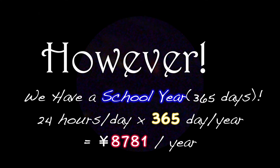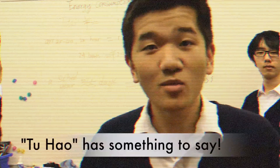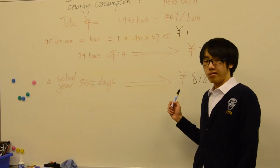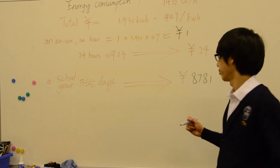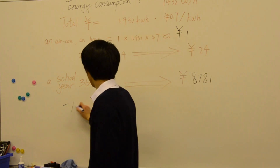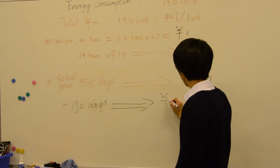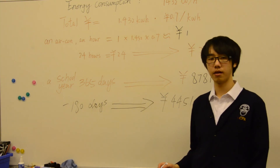It ran for a whole day. There are 180 days of holidays in a year, so let's subtract 180 days. Still, it's 4,451 yuan per air conditioner.